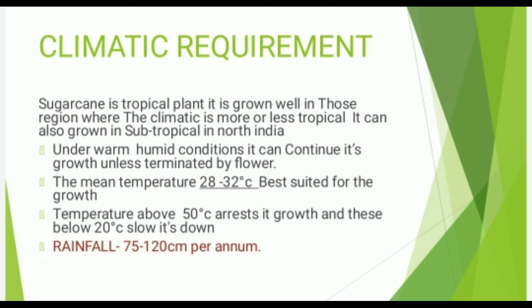Climatic Requirement: Sugarcane is a tropical plant. It grows well in tropical regions but also grows in subtropical areas such as North India. A mean temperature of 28 to 32 degrees Celsius is best suited for growth. Temperature above 50 degrees Celsius arrests growth and below 20 degrees Celsius slows it down. Rainfall requirement is 75 to 120 cm per annum.